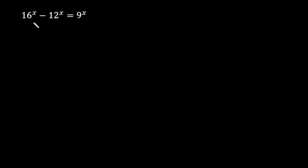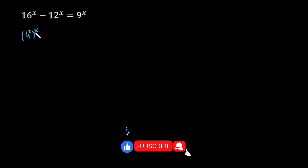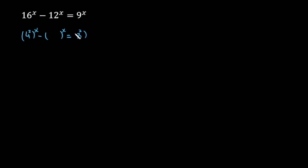When you come across an equation like this, there are two things: first, how to recognize this equation, and second, how to solve it. To recognize it: 16 can be written as 4 raised to the power 2, and 9 can be written as 3 raised to the power 2. So we have a square on both sides, and in the middle there is a multiplication of those two numbers: 4 times 3.